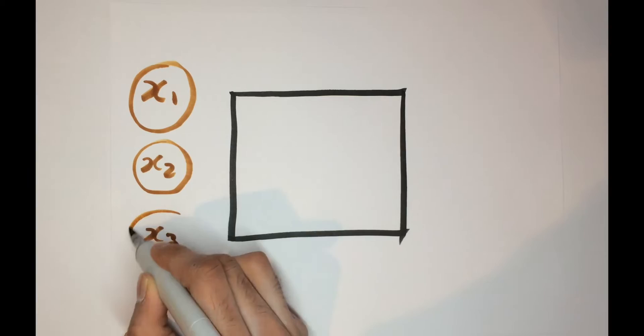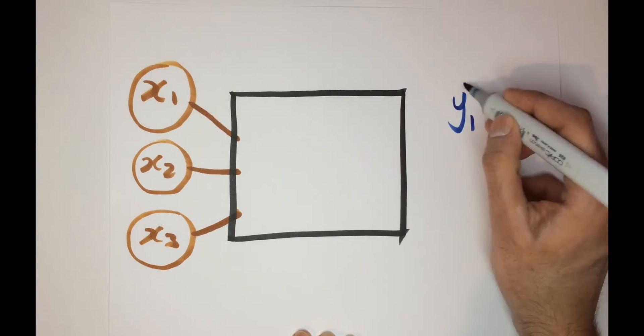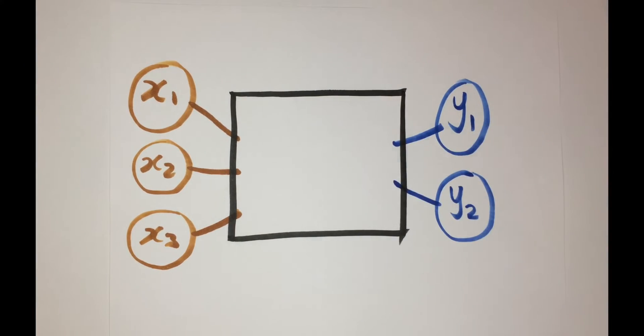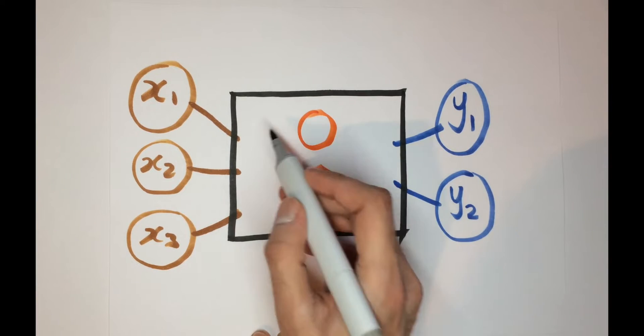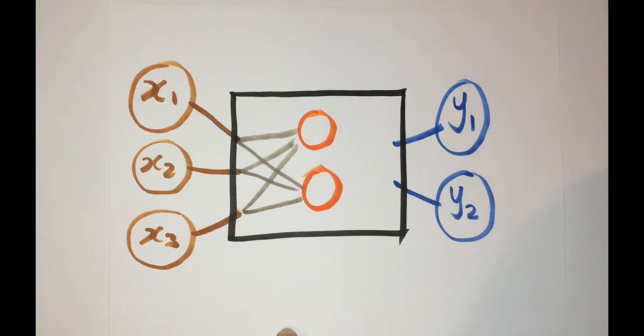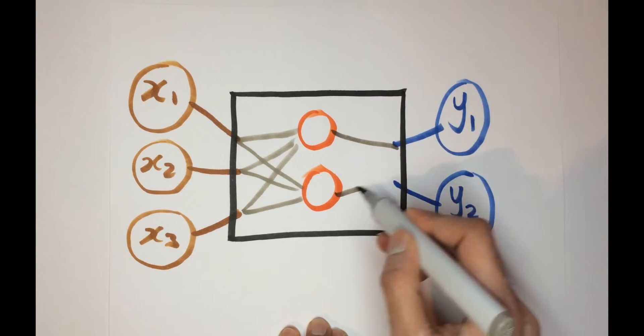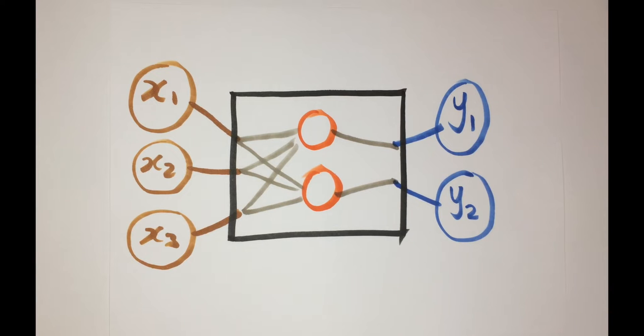Well you can think of a neural network as a black box that takes in a predefined number of inputs and spits out a desired number of output values. It has a bunch of knobs that transform the values of the input into the output and can be tweaked to align the model's predicted output with the true output.